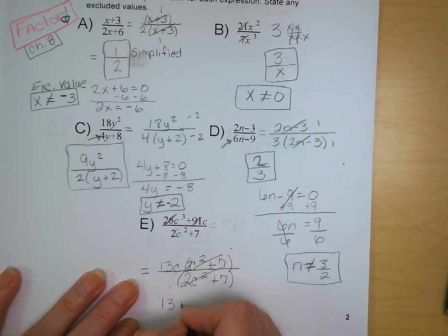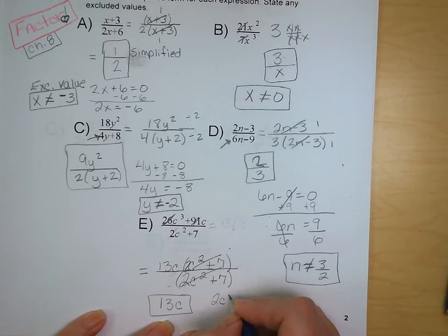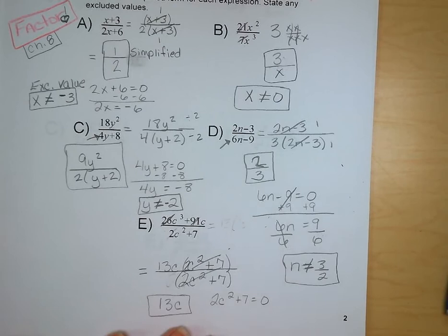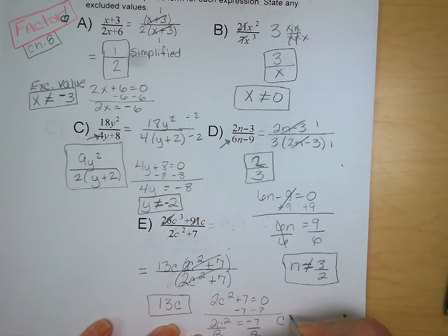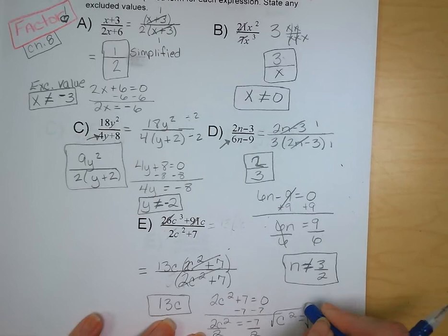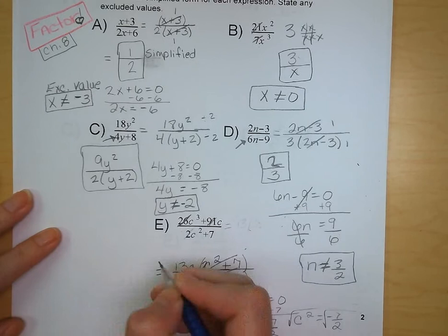Now we need to find our excluded value. We've got 2c squared plus 7 equal to 0. Subtract 7 from both sides: 2c squared equals negative 7, divide by 2, and c squared equals negative 7 halves. We cannot take the square root of a negative number in the reals, so for this one there are no excluded values — there's nothing we can plug into the denominator that would make it 0.